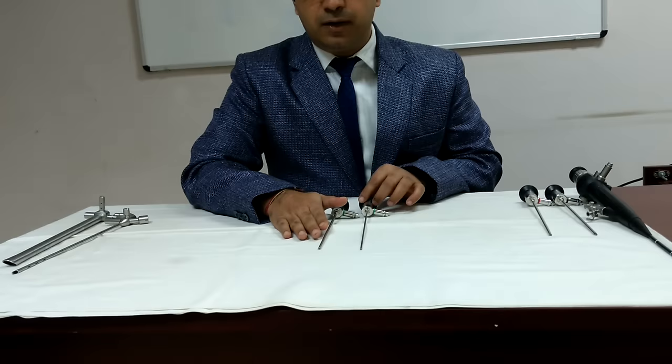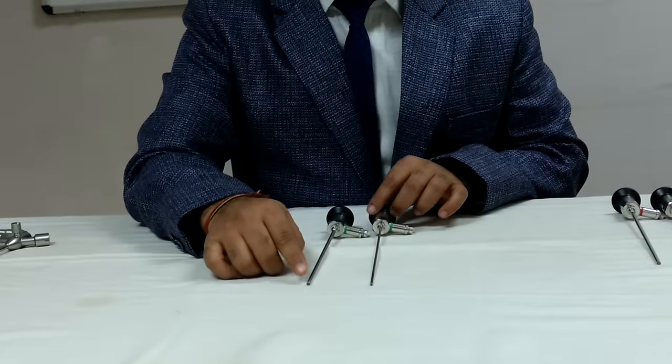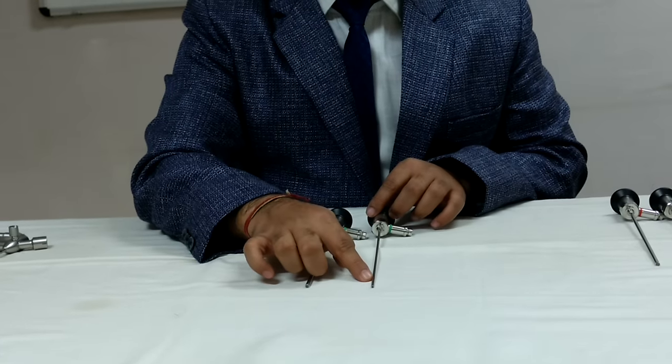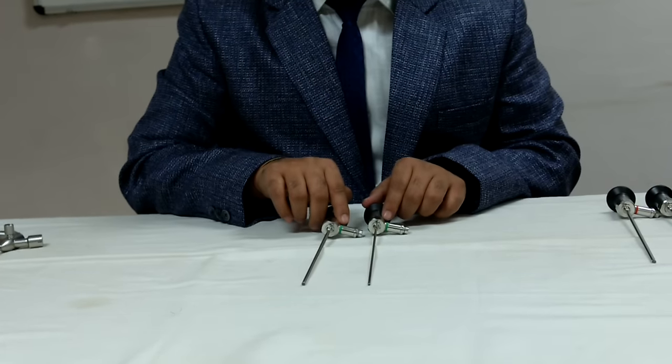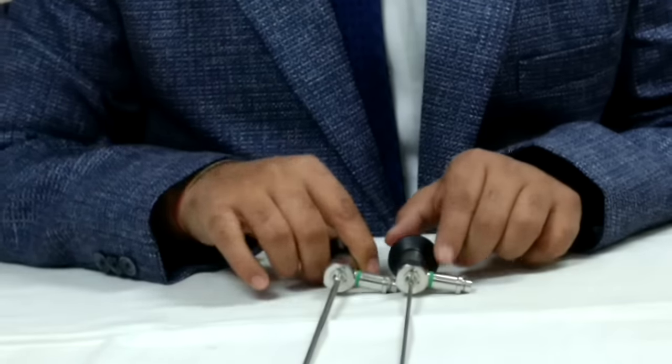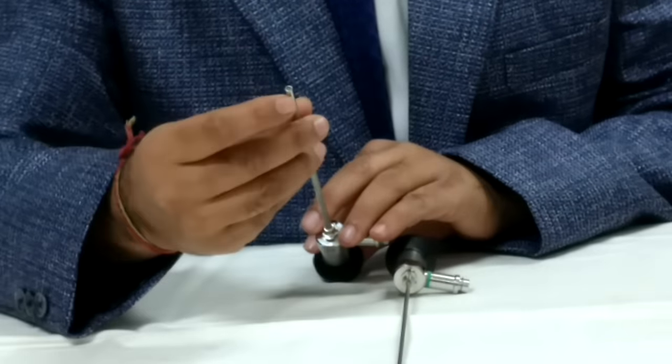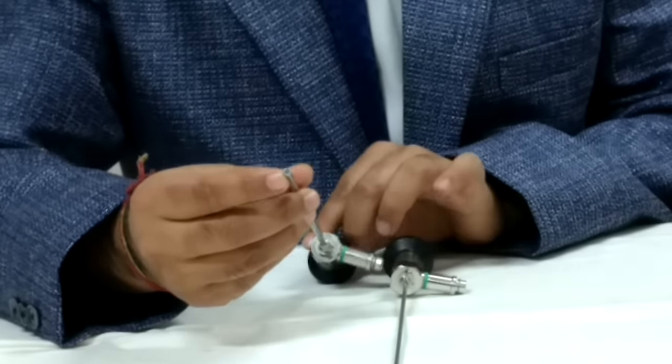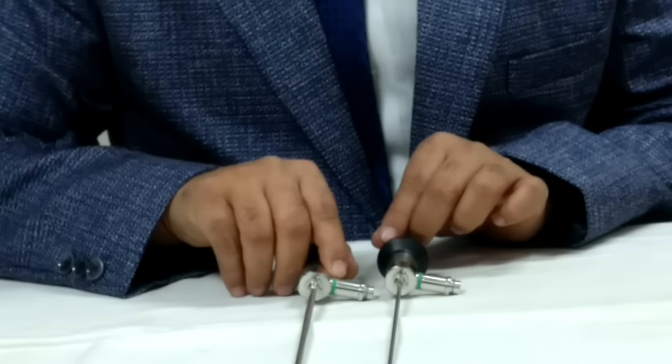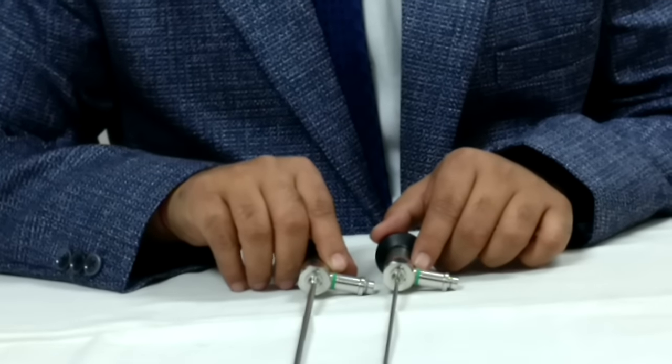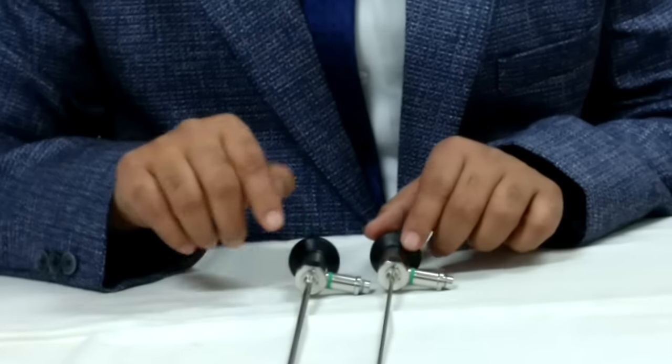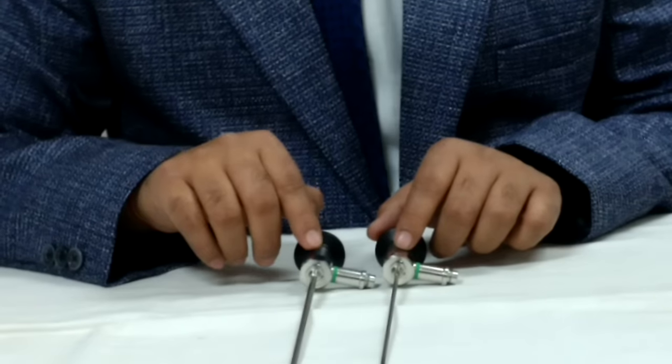Only difference is this is adult endoscope. This is pediatric endoscope. This is 4 millimeter diameter. This is 2.7 millimeter diameter. Otherwise, looking at this green, I will understand this is 0. So you need not always see the end to know what degree endoscope is there. You just see the ring, you will know which degree endoscope is there. Though it is always written also over the endoscope.